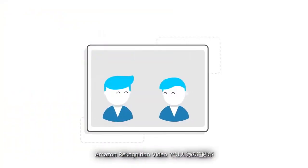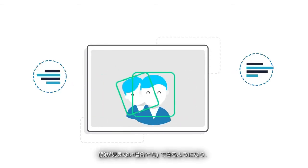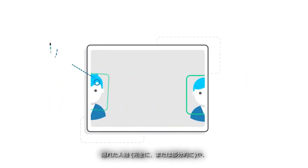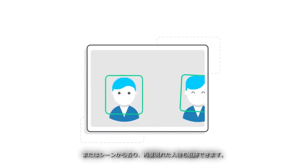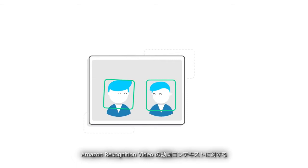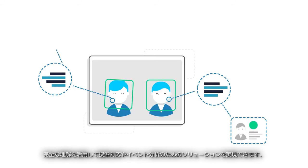With Amazon Rekognition Video, customers can now track persons even when faces aren't visible, track persons that are hidden fully or partially, or leave the scene and reappear. Customers can now leverage Amazon Rekognition Video's full understanding of video context to generate solutions for investigative response or event analysis.